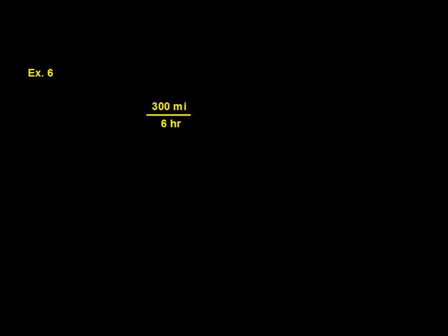Example number 6. In this case, you can see we have two different units of measure. We have miles, and we have a time measurement of hours.